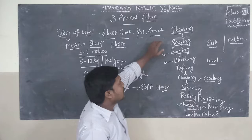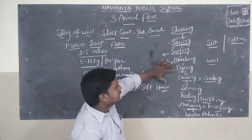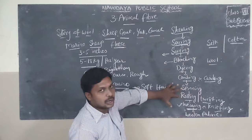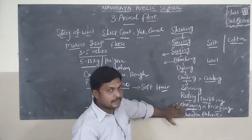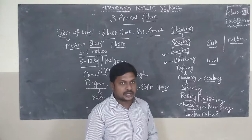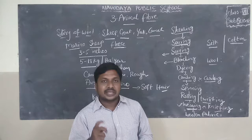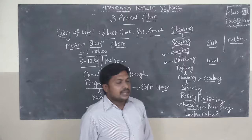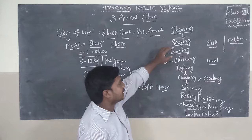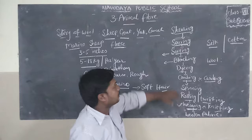Let me repeat the stages in the flow chart for wool production: shearing, scouring, sorting, bleaching, dyeing, combing or carding, spinning, rolling or twisting, weaving or knitting, and woolen fabric. In the previous class, you learned about how silk is produced: egg, larva, pupa, imago. This flow chart shows the production of woolen fabric.